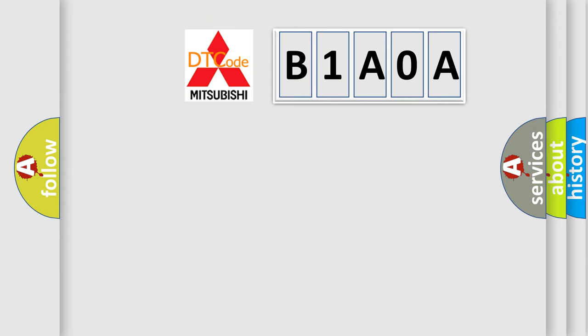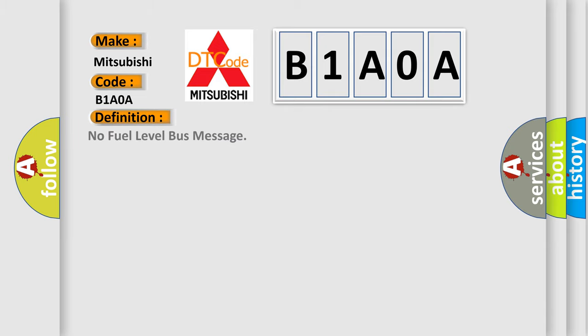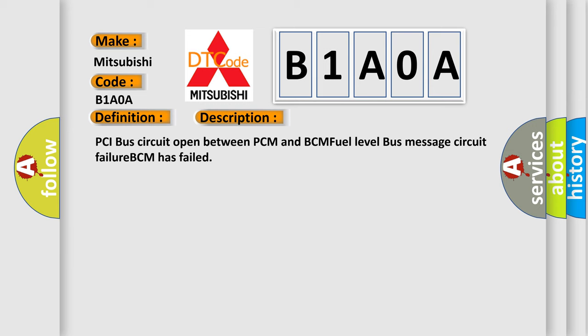So, what does the diagnostic trouble code B1A0A interpret specifically? For Mitsubishi car manufacturers, the basic definition is No fuel level bus message. And here is a short description of this DTC code: PCI bus circuit open between PCM and BCM, fuel level bus message circuit failure, BCM has failed.